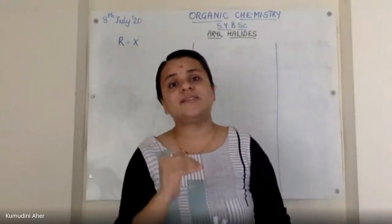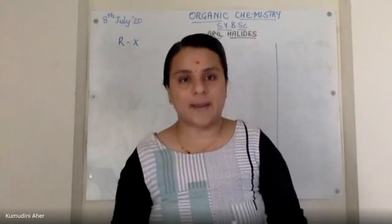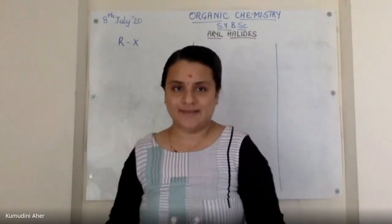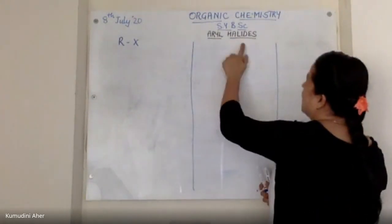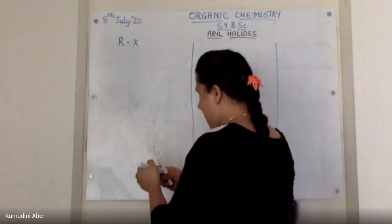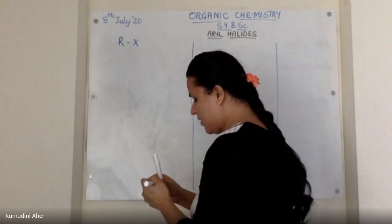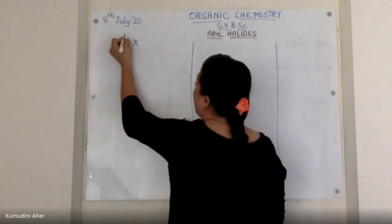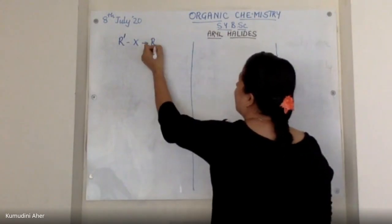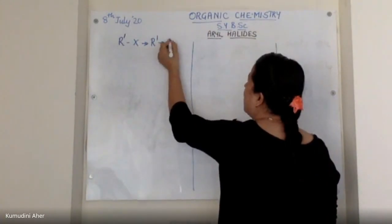Now we are starting with another chapter, called Aryl Halides. So Aryl Halides' symbol is R-X, where R stands for Aryl group.